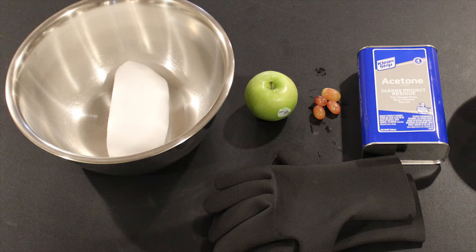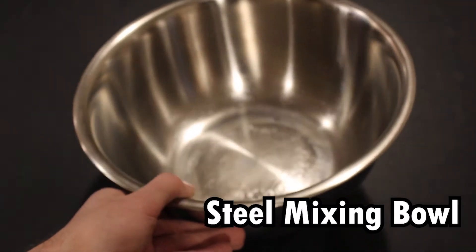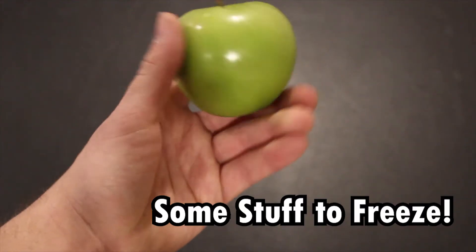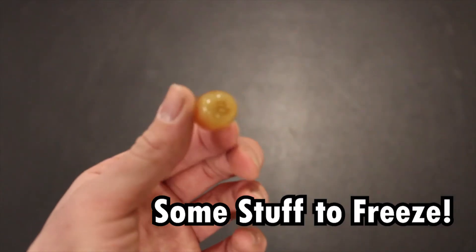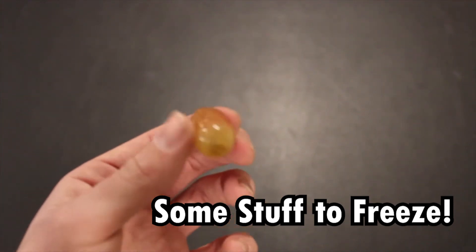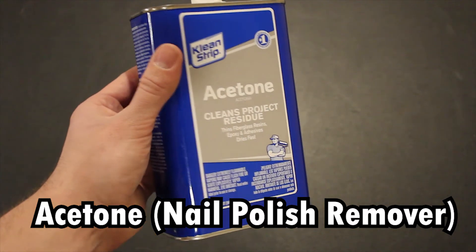For this project we will need some dry ice, a steel mixing bowl, anything that you want to freeze (keep in mind that you can't eat anything that you freeze like you can with liquid nitrogen), and acetone or if you don't have that most nail polish removers will work.